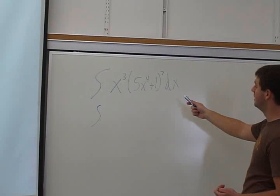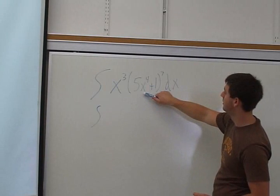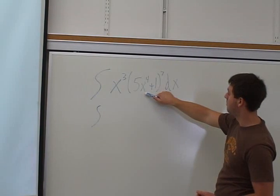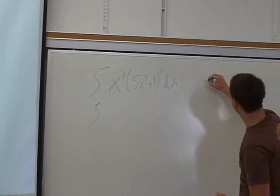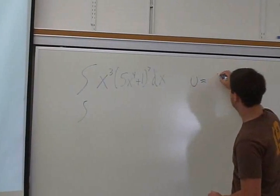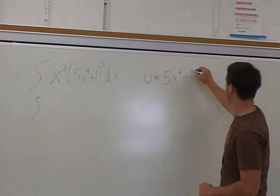We need to decide where u fits best. Since x³ is the derivative of x⁴, it's wise to use 5x⁴ + 1 as our u-substitution. So u = 5x⁴ + 1.